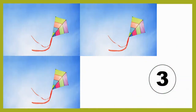See, there are kites in the sky. There are 1, 2, 3 kites in the sky.